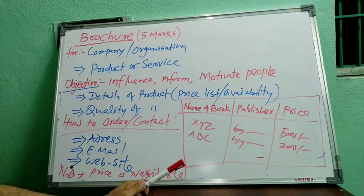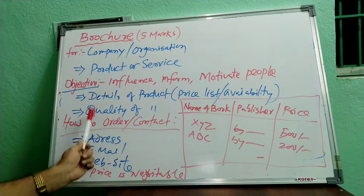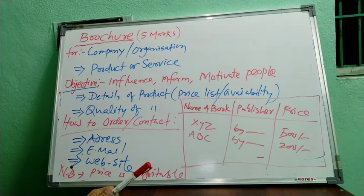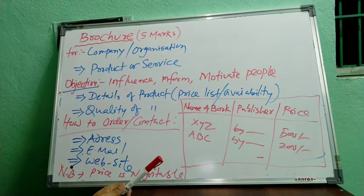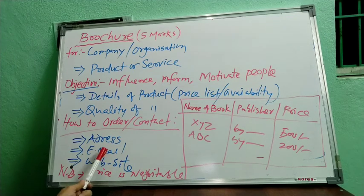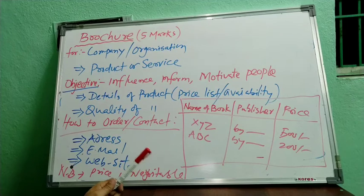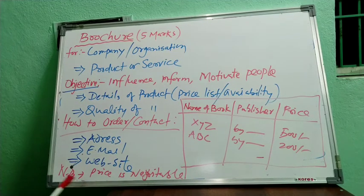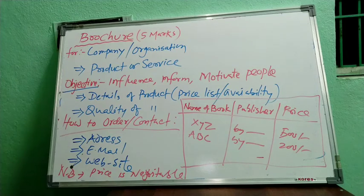You have to give the price list, the quality, popularity, brand, and marketing system. How are people benefited? How to order — contact us by this address. You can also contact us by email. Or you can place your order on our website. The price list is negotiable and the price is subject to change.